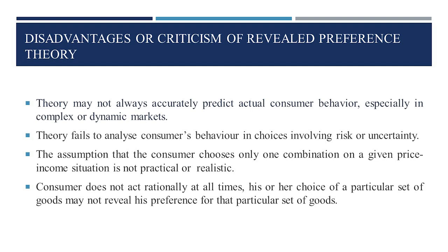One more limitation is that the assumption that the consumer chooses only one combination of goods in a given price-income situation is not practical or realistic. Since a consumer does not act rationally at all times, sometimes he may purchase due to unidentified factors or whims and fancies, and his or her choice of a particular set of goods may not truly reveal a preference for that set of goods. In that case, the theorem is not fully based on observed consumer behavior in the market.